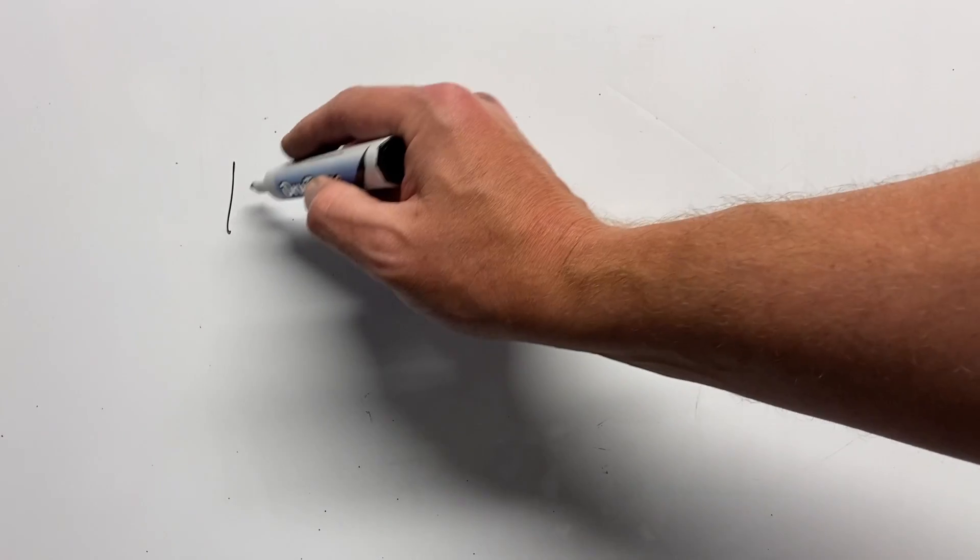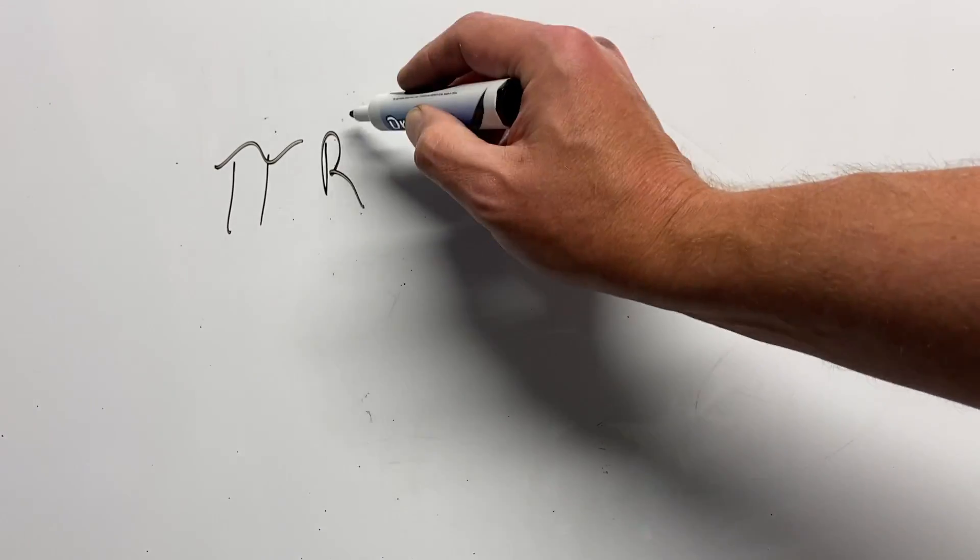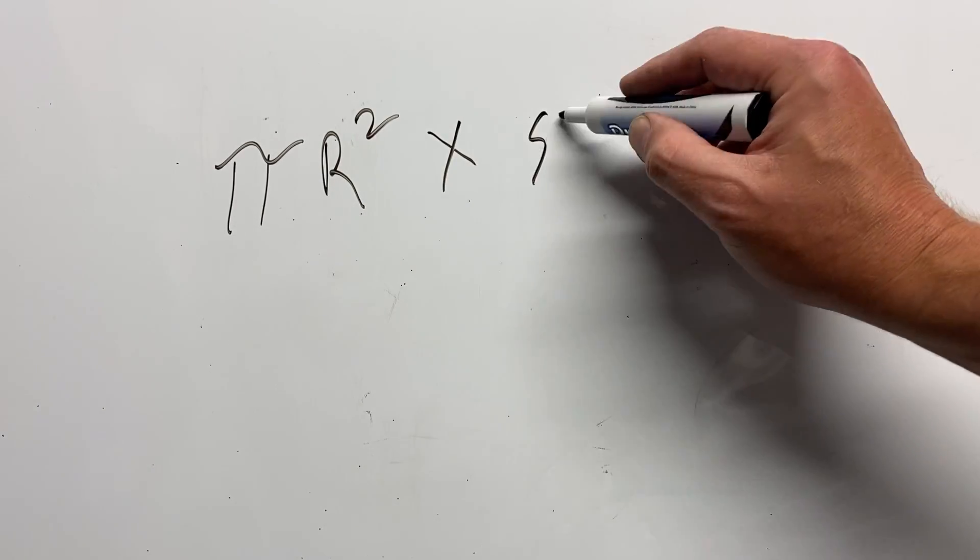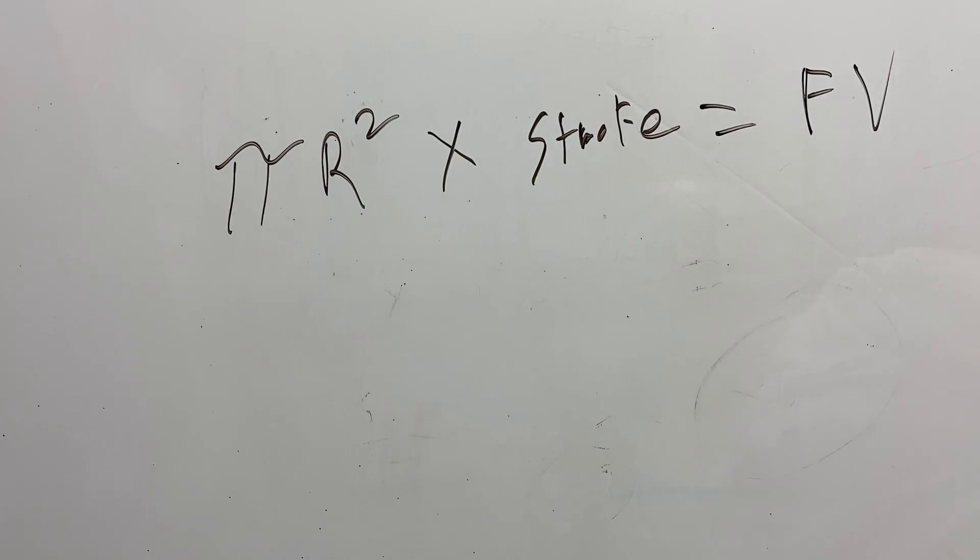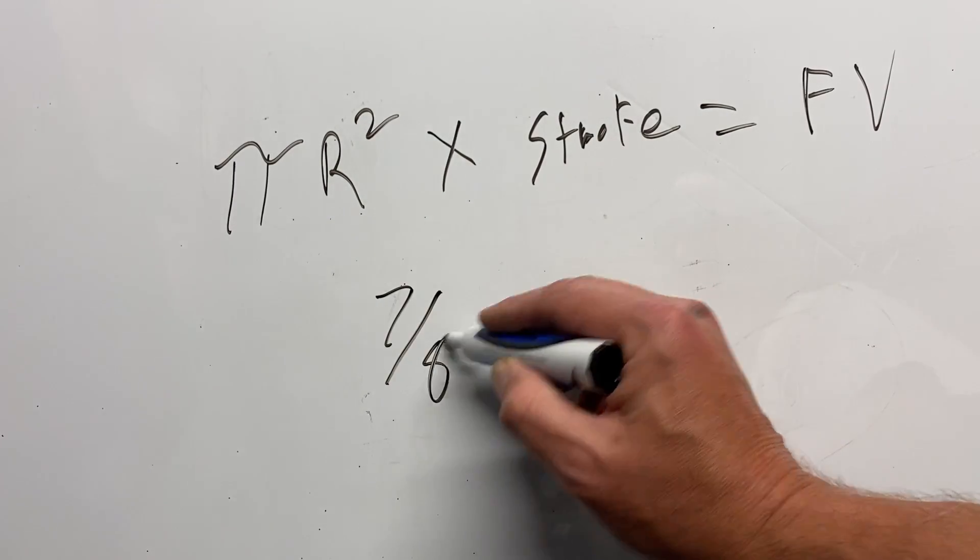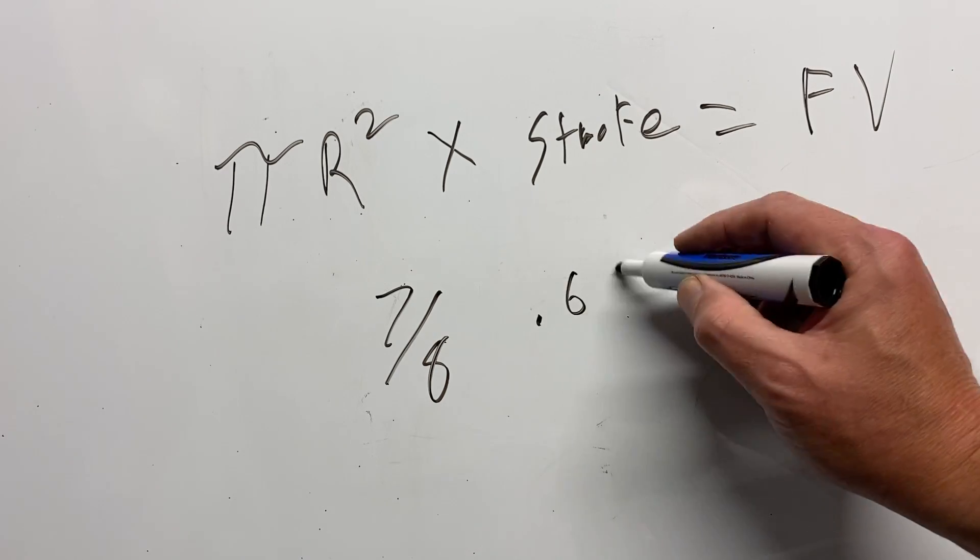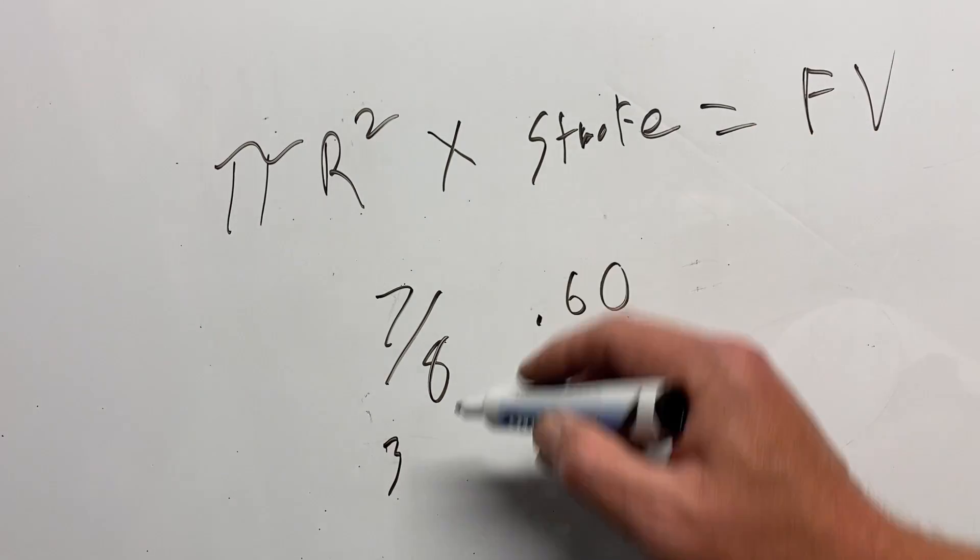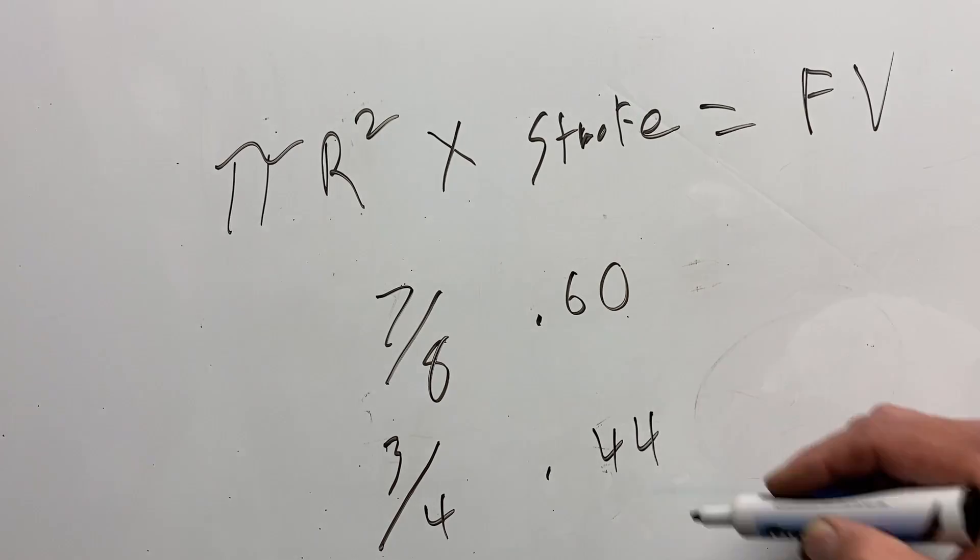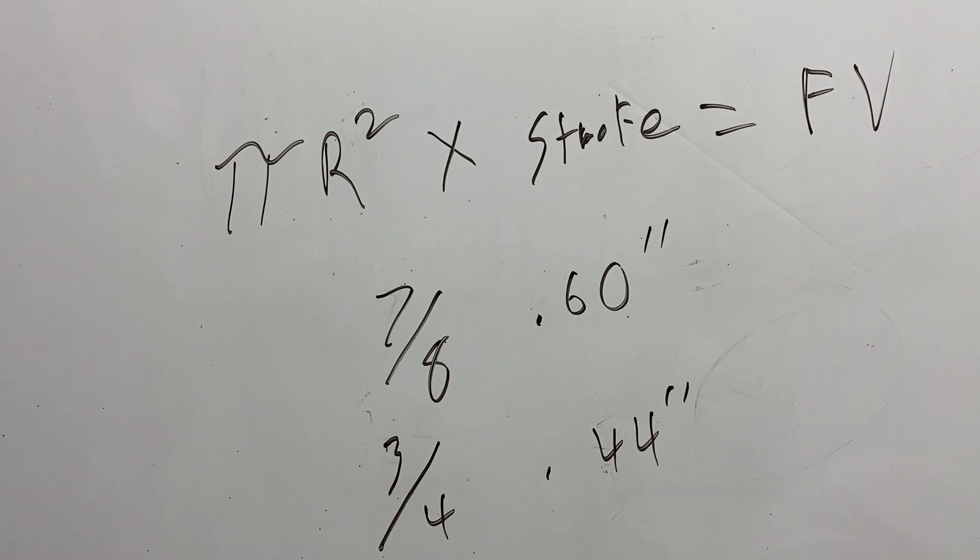So that takes us back to the question, will their OEM slave cylinder work? Well, you have no choice but to do the math and calculate fluid volume. So it's pi r squared times stroke equals fluid volume. And then you can see if it works with the slave cylinder in question. The fluid volume requirements for my 7 eighths slave is 0.60 or just a little bit less. Again, my kits require 0.9 inches so you can get away with a little less. If you use my 3 quarter inch slave cylinder, it's 0.44 inches. And those are the numbers we are trying to reach.